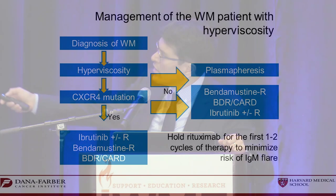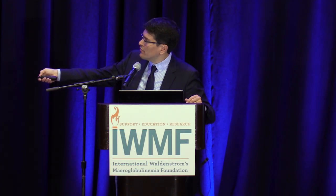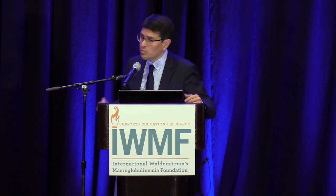Our approach to hyperviscosity: if the patient has active hyperviscosity, we do plasmapheresis. If the patient has CXCR4 mutations — a concern for hyperviscosity — then bendamustine with Velcade or carfilzomib may be better options for a faster response. If there are no CXCR4 mutations, ibrutinib is a very good option. And holding ibrutinib is the right thing to do when needed.